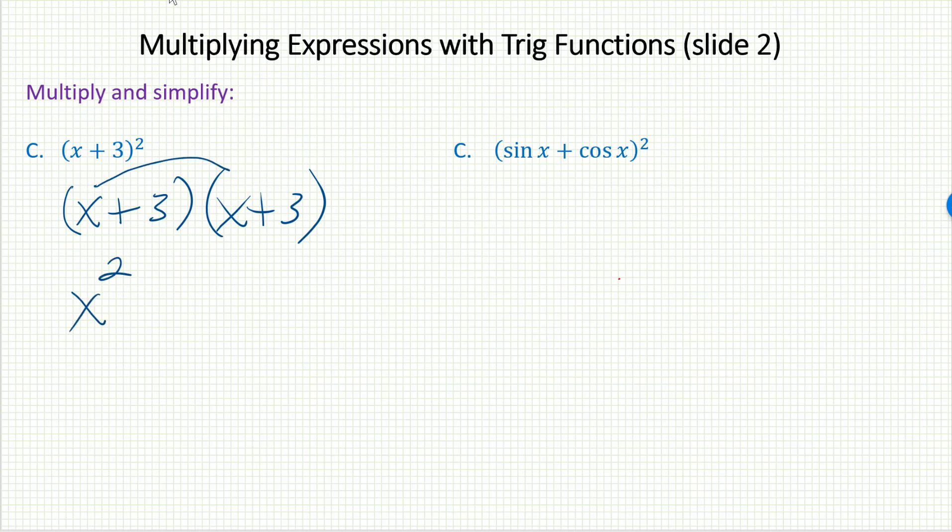x squared would be the first. Outer would be a 3x. Inner would be another 3x. I get a 9 at the back end. And when I combine my like terms, here's my final answer.